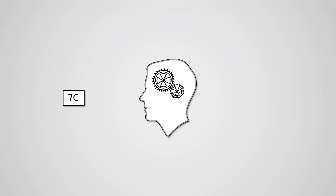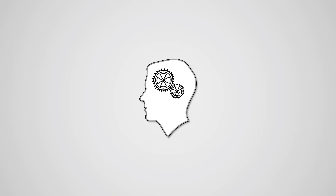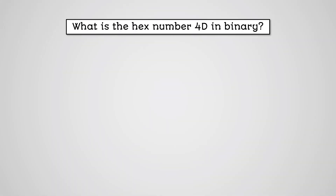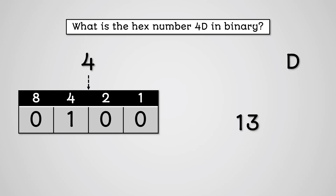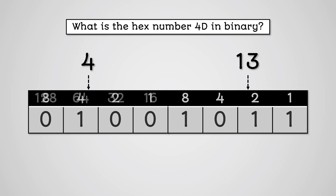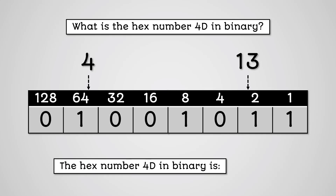Finally, how do we convert a hexadecimal number into binary? We need to understand that each hex column is basically a binary nibble — a number that goes from 0 to 15. Let's use 4D. We recognize these as 2 individual nibbles and work them out separately. First, we convert 4 into binary. Then we convert D, which is 13 in decimal, into binary. Then we simply stick them together. So 4D in binary is 01001011.